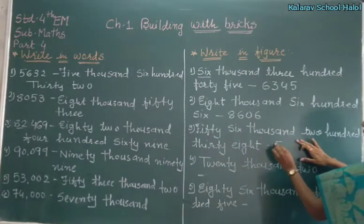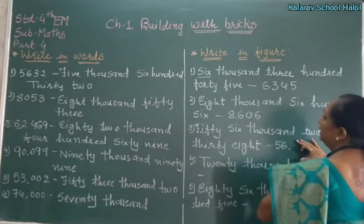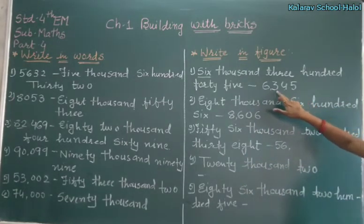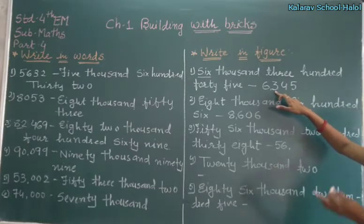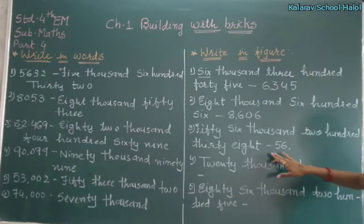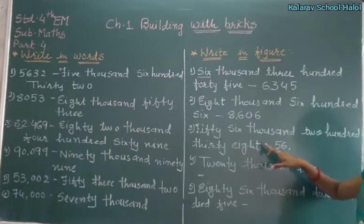56,000. Now, 1, 10, 100 — this is our Indian system. The international system is different. In the international system there are millions, thousands, and hundreds. But here, in our Indian system, we have ones, tens, hundreds, thousands, ten thousands, then one lakh, ten lakh, crore, ten crore.